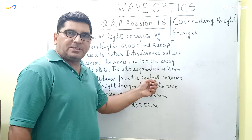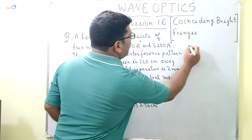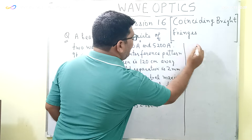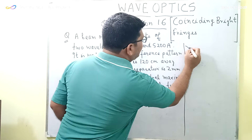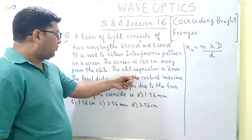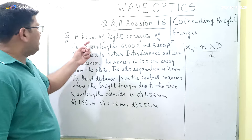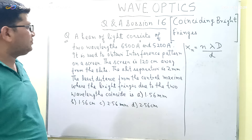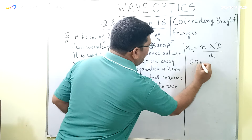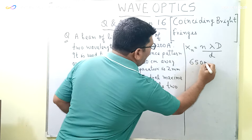The distance of the nth bright fringe from the central maxima is given by the formula x_n = n·λ·D / d, where D is the distance of the screen from the slits, d is the slit separation, n is the nth bright fringe from the central maxima, and λ is the wavelength.